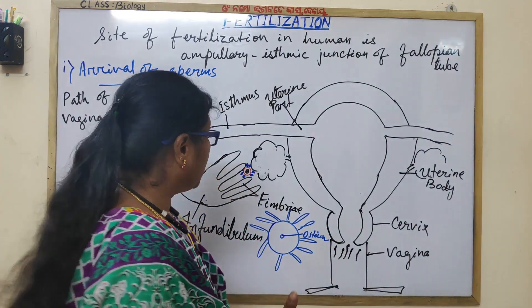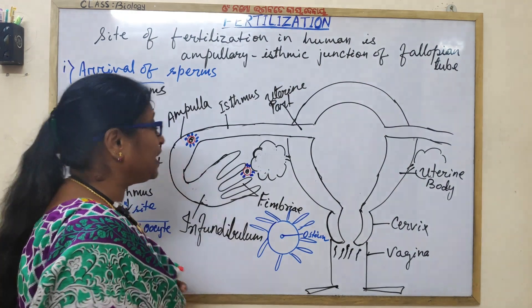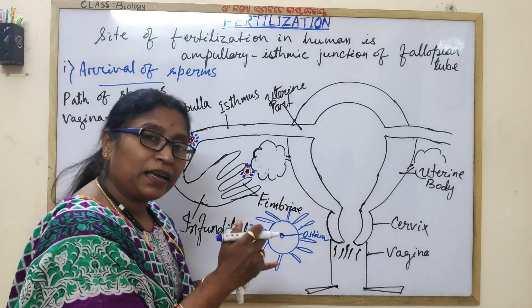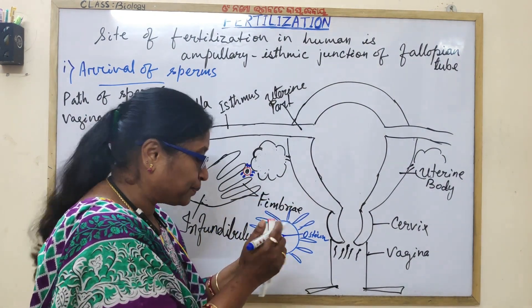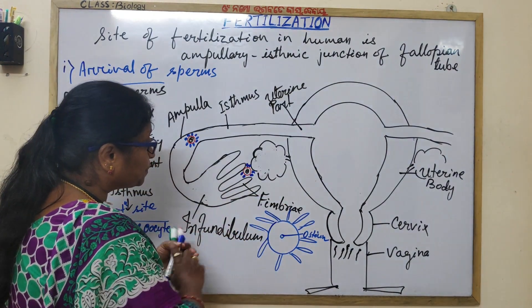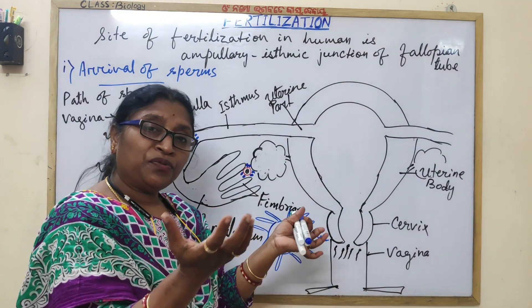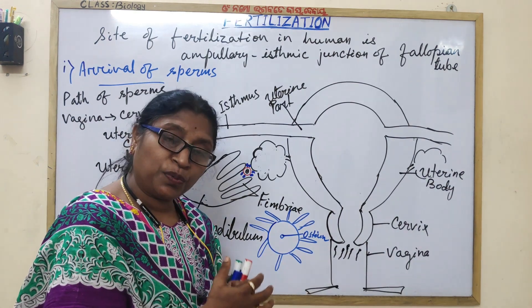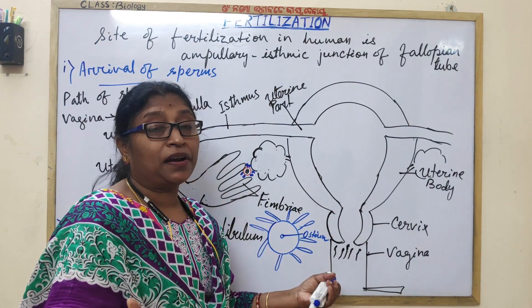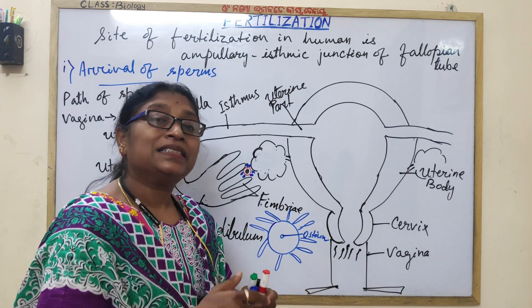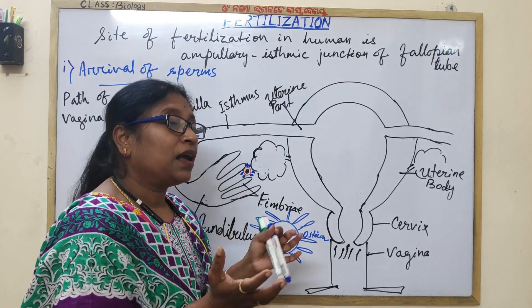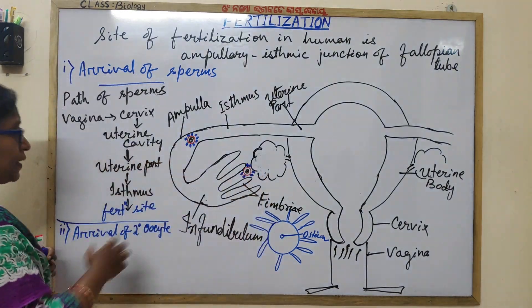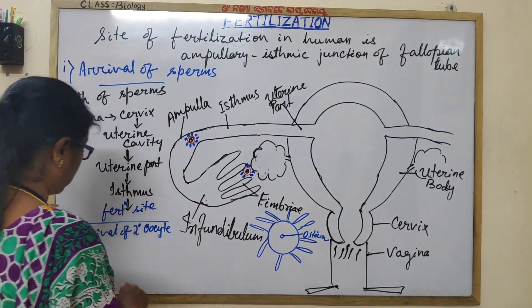The ovum is not motile — it is sessile. Its movement is driven by the fimbriae and the cilia present inside the fallopian tube. The uterine tube is lined by ciliated epithelium, which helps in moving the secondary oocyte and the surrounding cells.